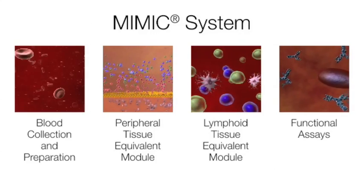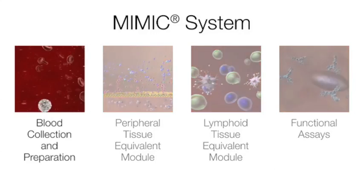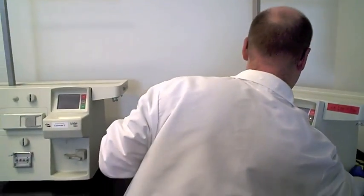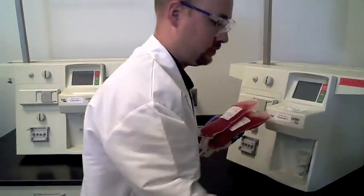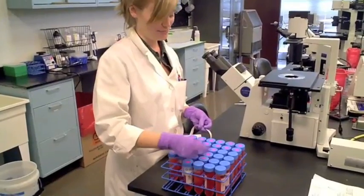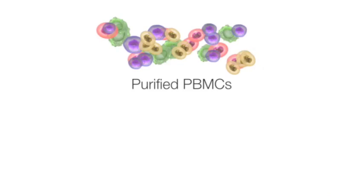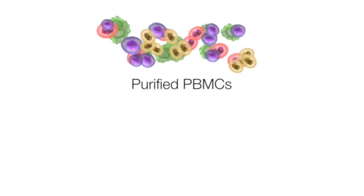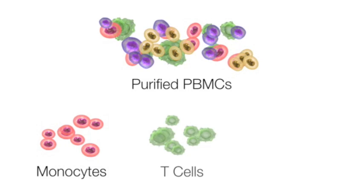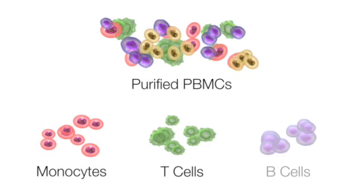The first step is blood collection and preparation. In collaboration with Florida's blood centers, we collect white blood cells from pre-screened donors. We take the white blood cells and process them into either purified PBMCs or isolated subpopulations of the PBMCs, such as monocytes, T-cells, and B-cells.